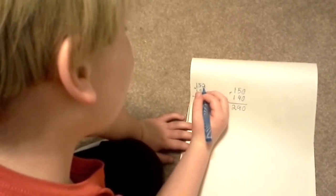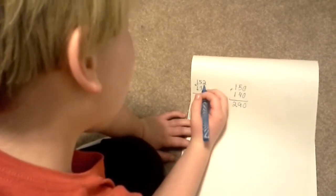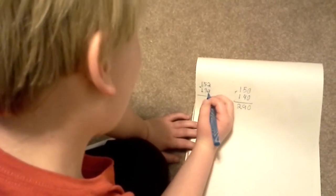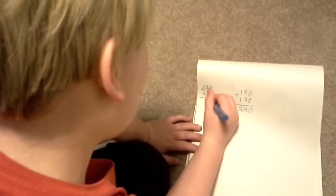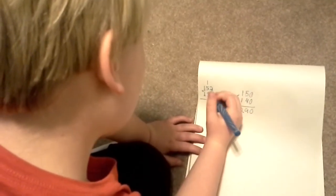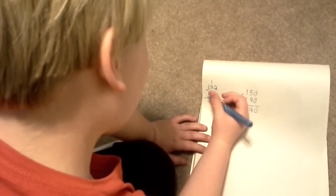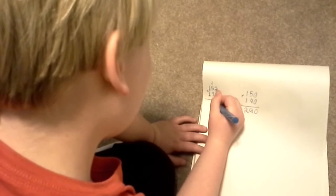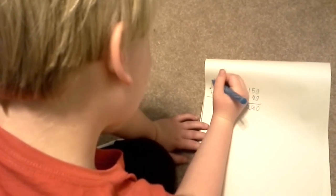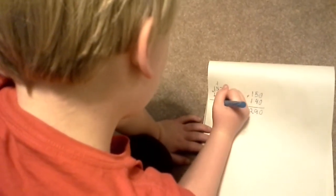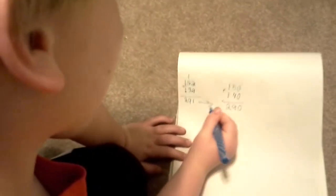Now you're going to check this one and see if it's close to this one. 2 plus 9 equals 11, carrying my 1. 5 plus 3 equals 8, plus 1 more equals 9, and 1 plus 1 equals 2. 291.